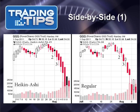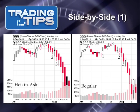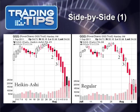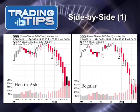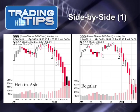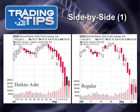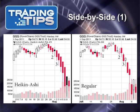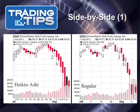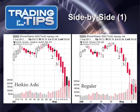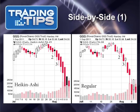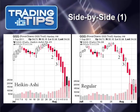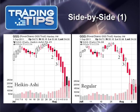Now look at point two. The Heikin-Ashi chart shows three consecutive hammer candlesticks with no upper shadows — these are very bearish according to our list from a few slides ago. Indeed there were three consecutive filled candlesticks without upper shadows. But on the regular candlestick chart there's only one hammer followed by two hollow candles, which did not offer a reliable prediction of what was to come.